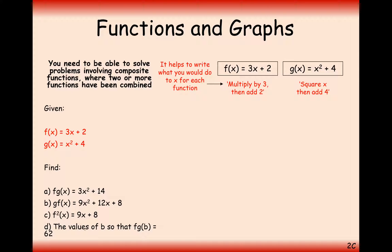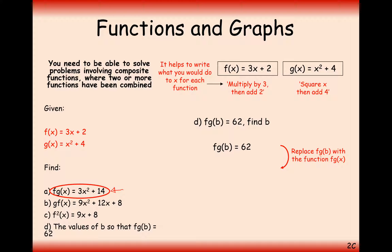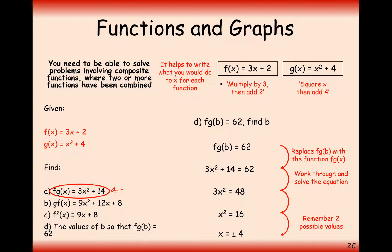The final part of this question: find the value of b such that fg(b) = 62. We've done a lot of the work already — we know that fg(x) = 3x² + 14. So all we need to do is replace x with b: 3b² + 14 = 62. Rearranging this, b = ±4. Make sure you're still applying the rule that when inversing a square, you get a positive and negative value.